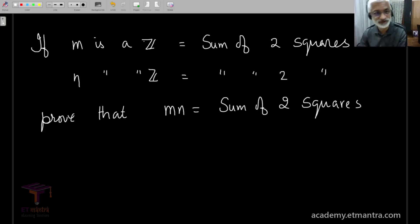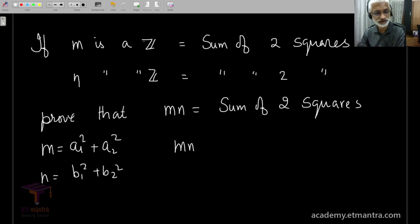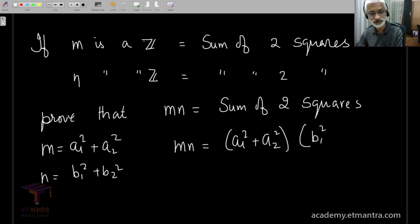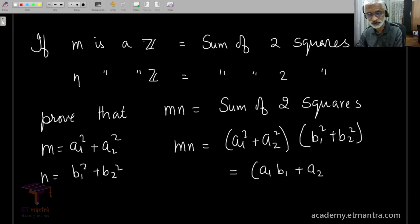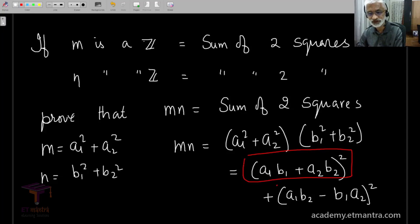Given m = a1² + a2² and n = b1² + b2², then mn = (a1² + a2²)(b1² + b2²). By the identity we just learned, this equals (a1·b1 + a2·b2)² + (a1·b2 − b1·a2)², which is clearly the sum of two squares — the first square and the second square. The proof is complete.